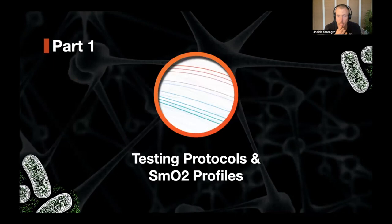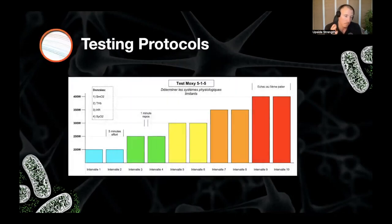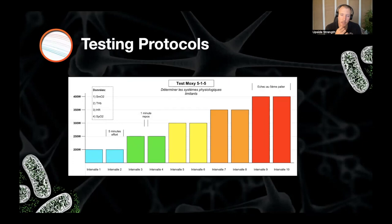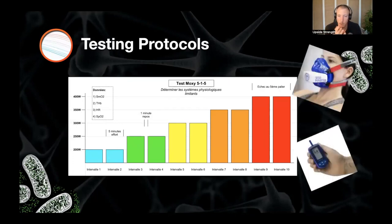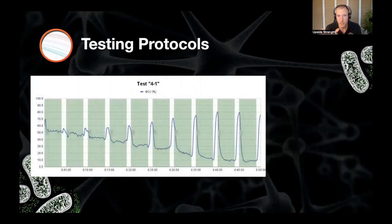So first part is going to be talking about testing protocols and SMO2 profiles. Then we'll talk about threshold determination using Moxie monitor and how we operate in that space. Talking about then the link between critical power and oxygen delivery capacity and W-prime and systemic oxygen reserve. Jumping right into part one, testing protocols and SMO2 profiles. So Moxie is the first measurement tool that I had access to. And it kind of opened the door for me into exercise physiology and all its wonders that I enjoy today.